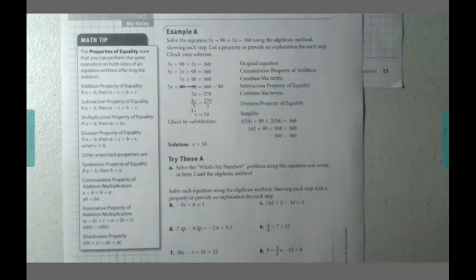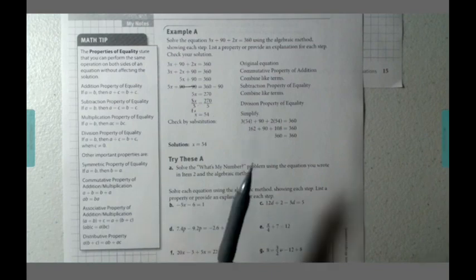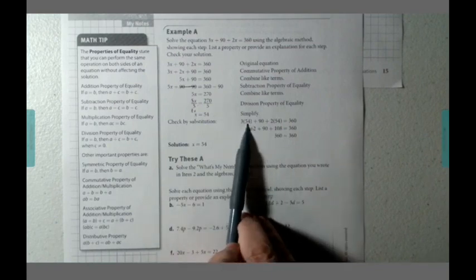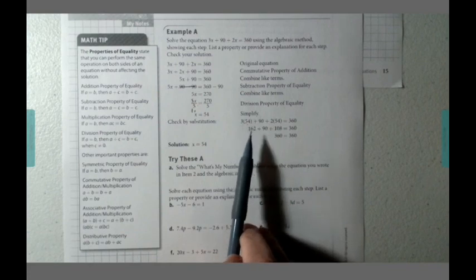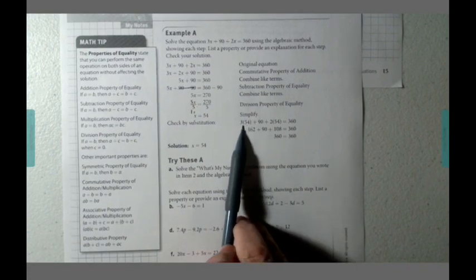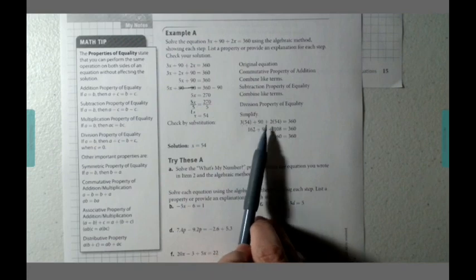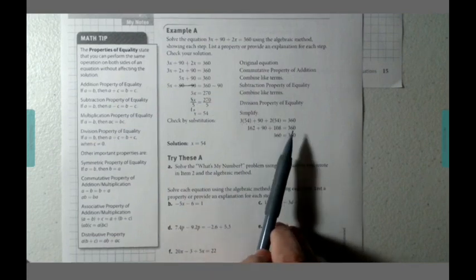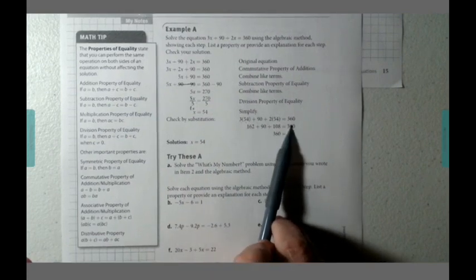Now, it does always ask us to do a check of our answers. So notice, every time they saw the letter x, they plugged in the value of 54. So 3 times 54 plus 90 plus 2 times 54. And we're trying to make sure that this equals 360.